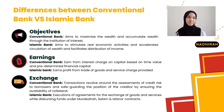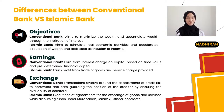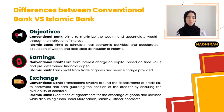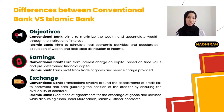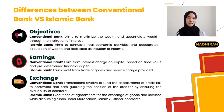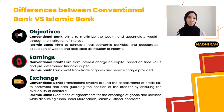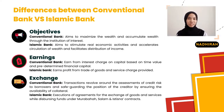I will explain the difference between the conventional bank and Islamic bank. The first difference is in terms of objective: conventional banks aim to maximize the wealth of shareholders and accumulate wealth through the institution of interest, while Islamic banks aim to stimulate real economic activities, accelerating the circulation of wealth and facilitating the distribution of income.